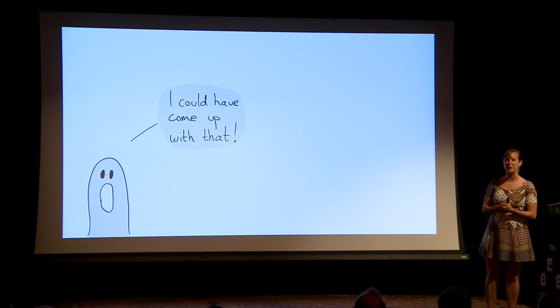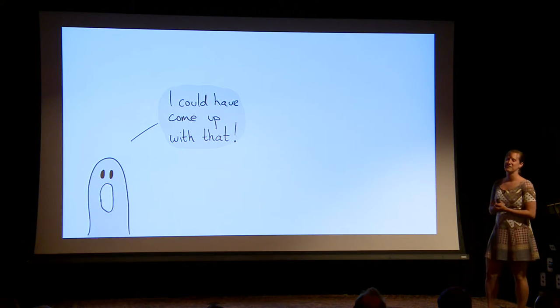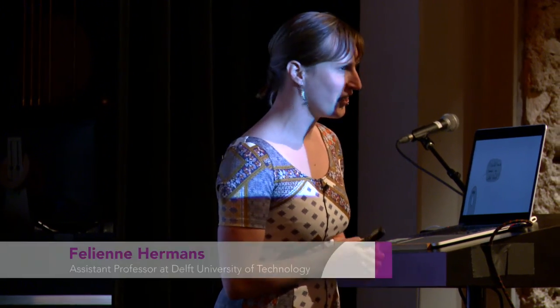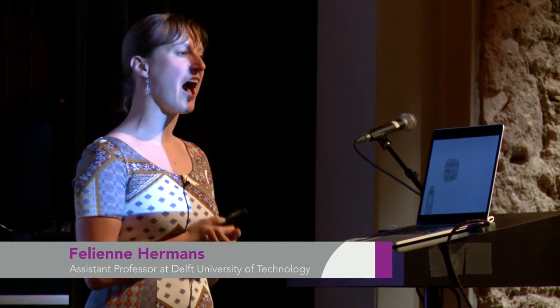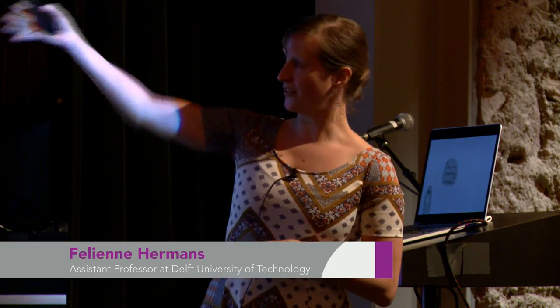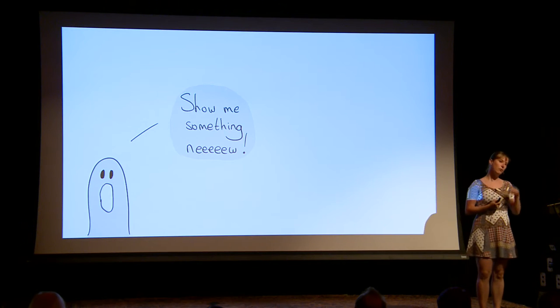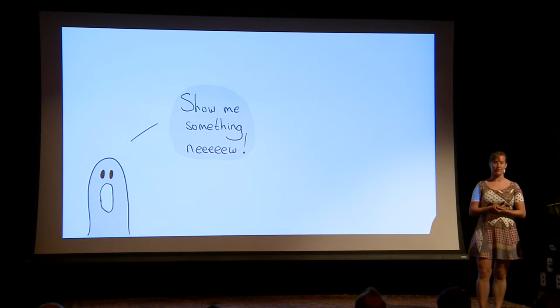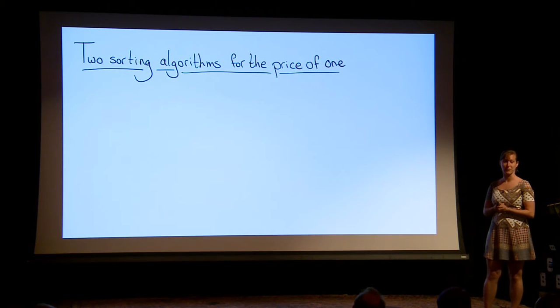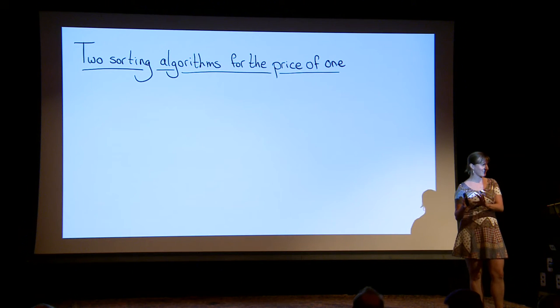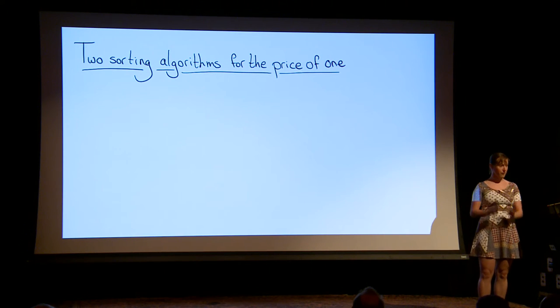So at this point, maybe some of you are thinking: yeah, I could come up with that program — it's a very easy program, I don't need program derivation to calculate the sum of a bunch of numbers. Yeah, that's true, but you have to start easy. What you maybe want is something new: derive an algorithm you haven't seen before, or for which you couldn't come up with the derivation yourself. So the rest of my talk I'm going to spend on this — two sorting algorithms for the price of one. I'll start with defining what exactly sorting is, and then derive two different but similar sorting algorithms from a specification.